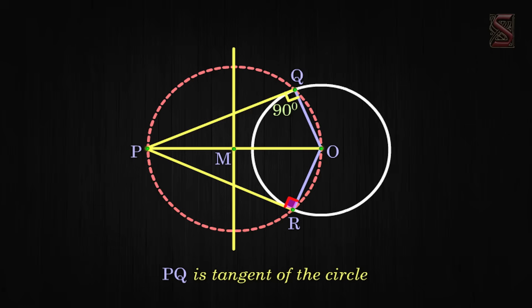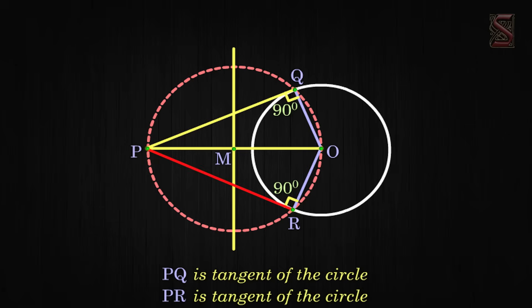Similarly, angle PRO is 90 degrees and OR is the radius of the given circle. Therefore PR is also a tangent to the circle.